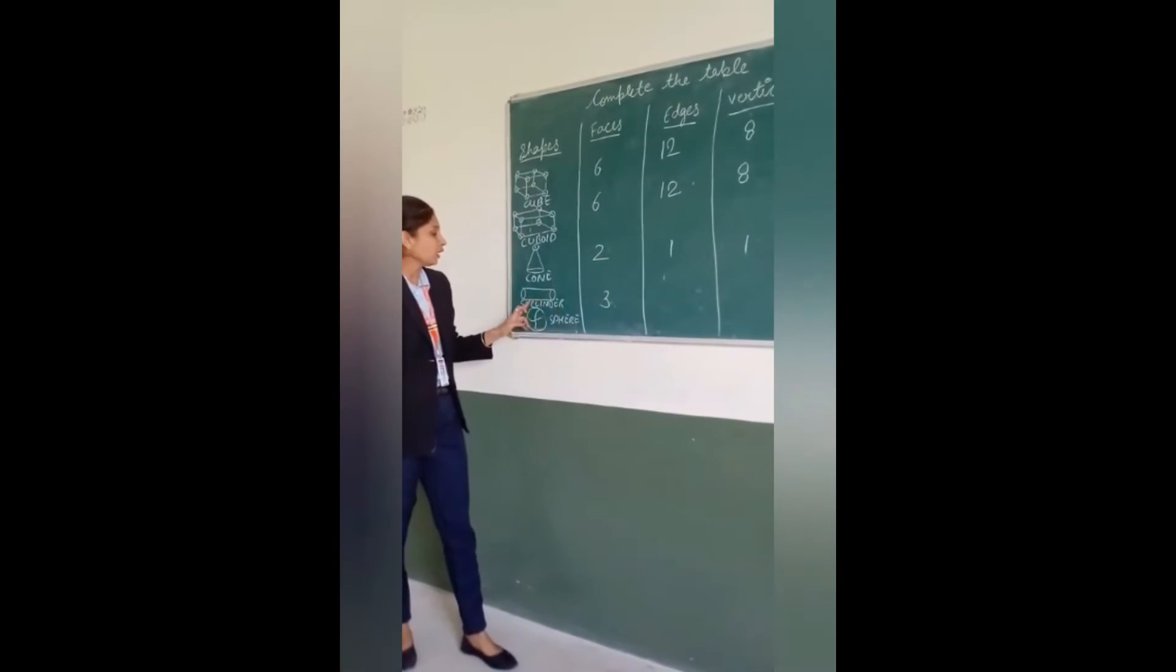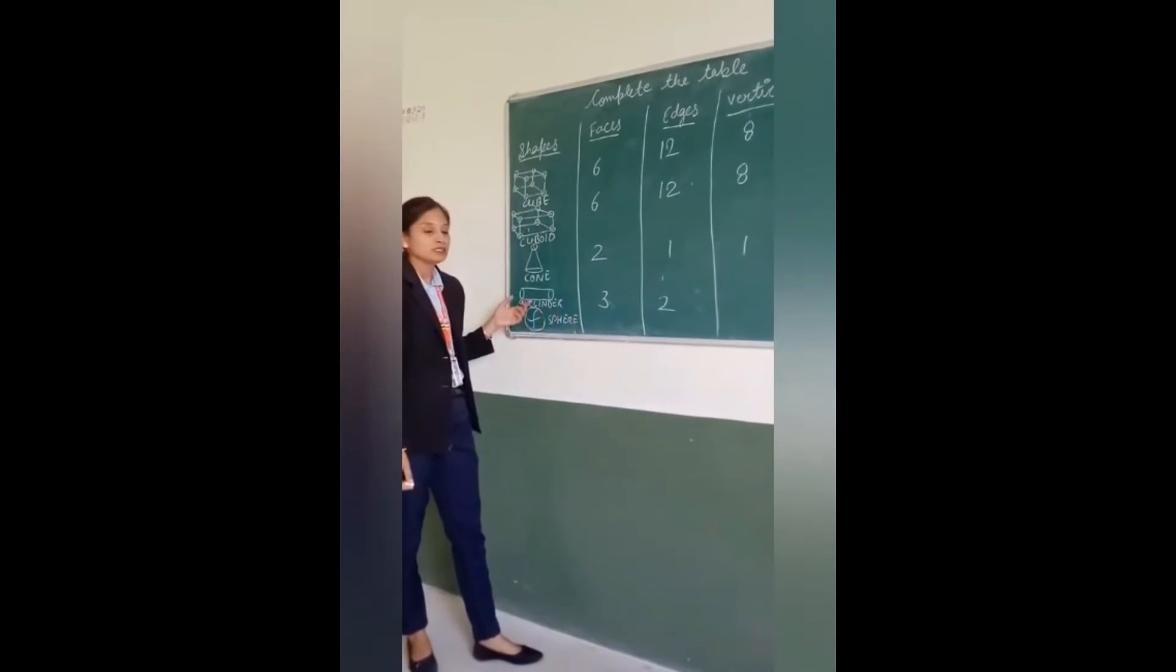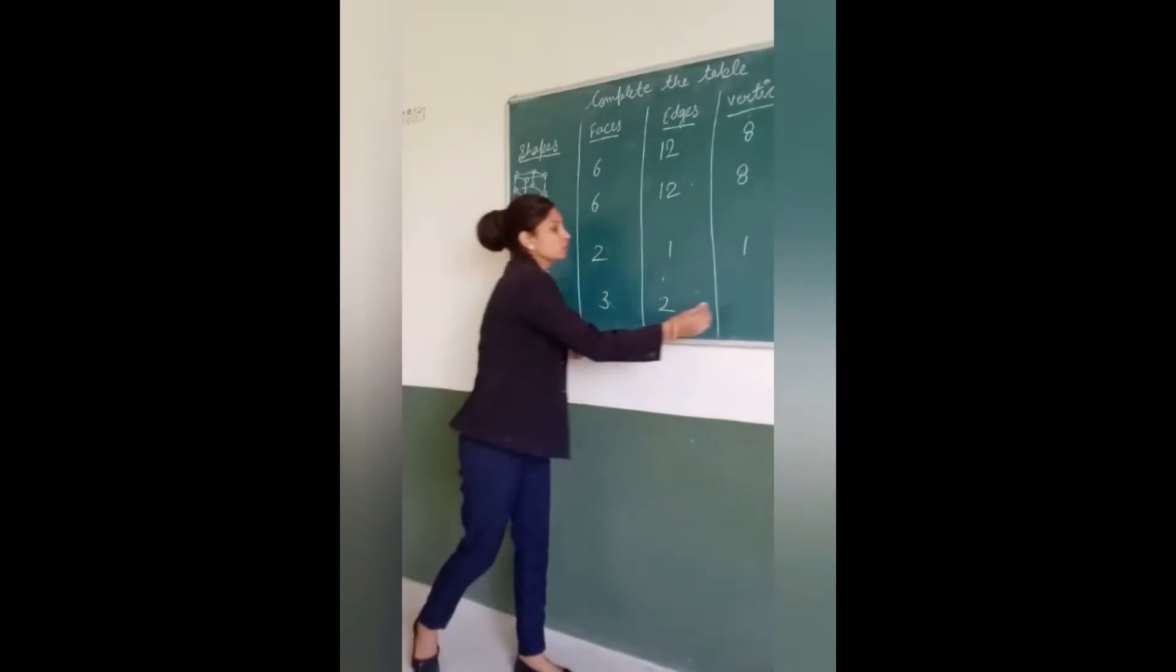And how many edges? Edges 2. And vertices? Cylinder has no vertex. So, 0.